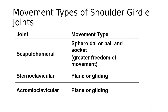Regarding movement types of the shoulder girdle joints: the scapulohumeral joint is a spheroidal or ball-and-socket joint, providing much greater freedom of movement — the arm can move in a circular motion in all directions assuming no injury. The SC joints and AC joints are plane joints, or gliding joints.